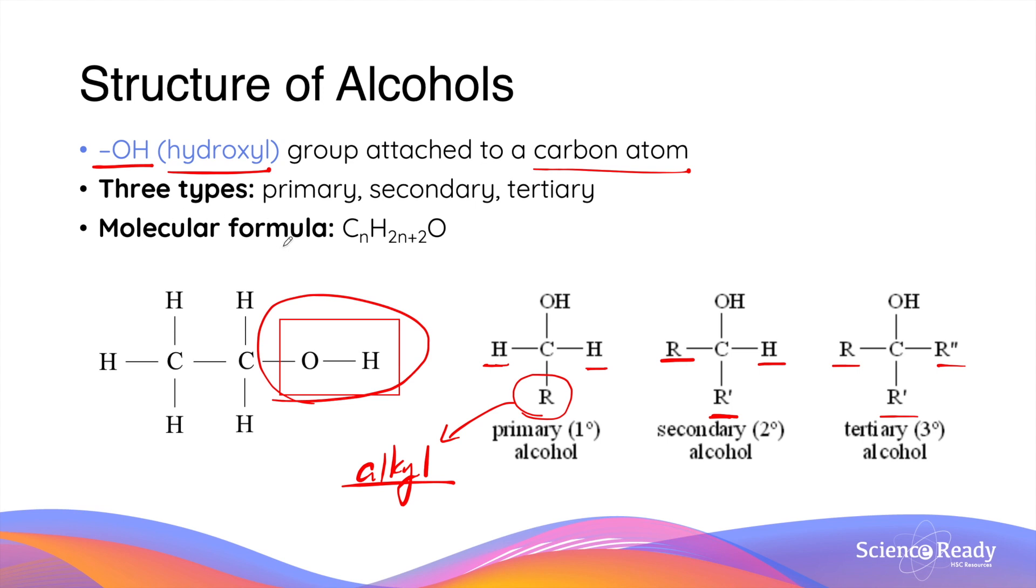The general molecular formula of alcohols is CnH2n plus 2O. This is when there is only one alcohol group attached. When that's the case, the number of hydrogen atoms in the alcohol is twice the number of carbons plus 2, so very similar to an alkane molecule just with additional oxygen attached.